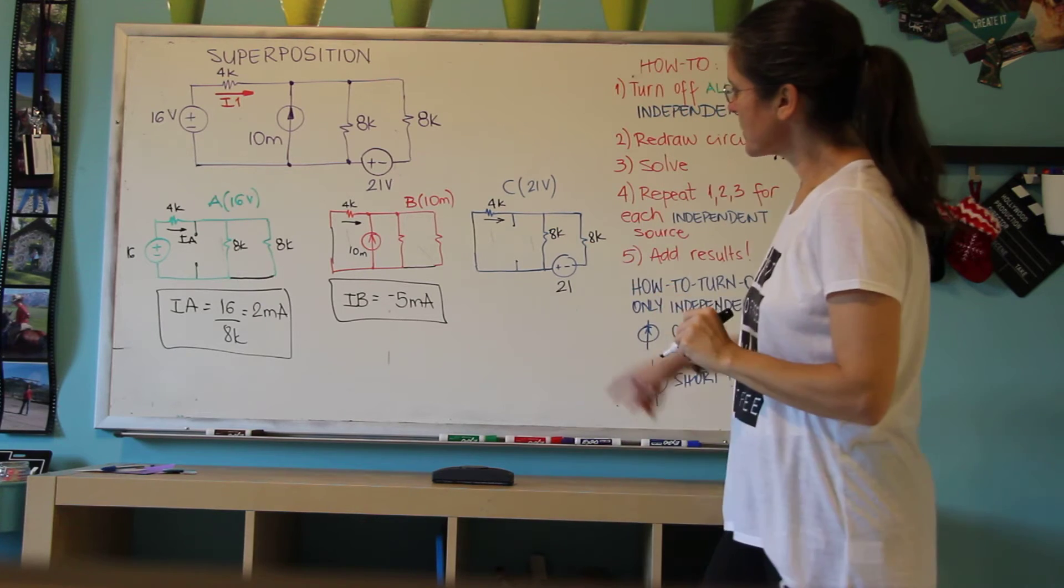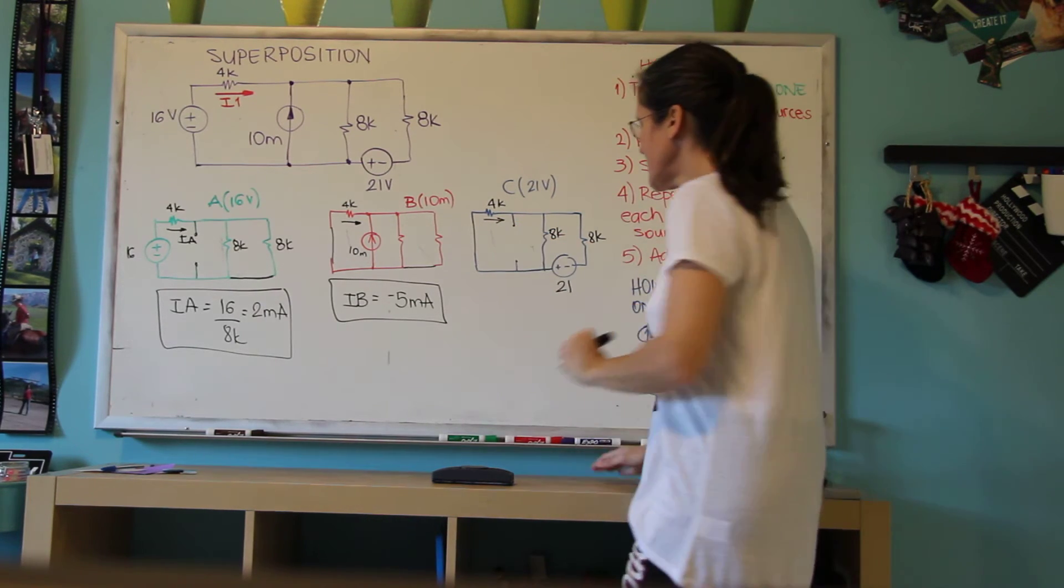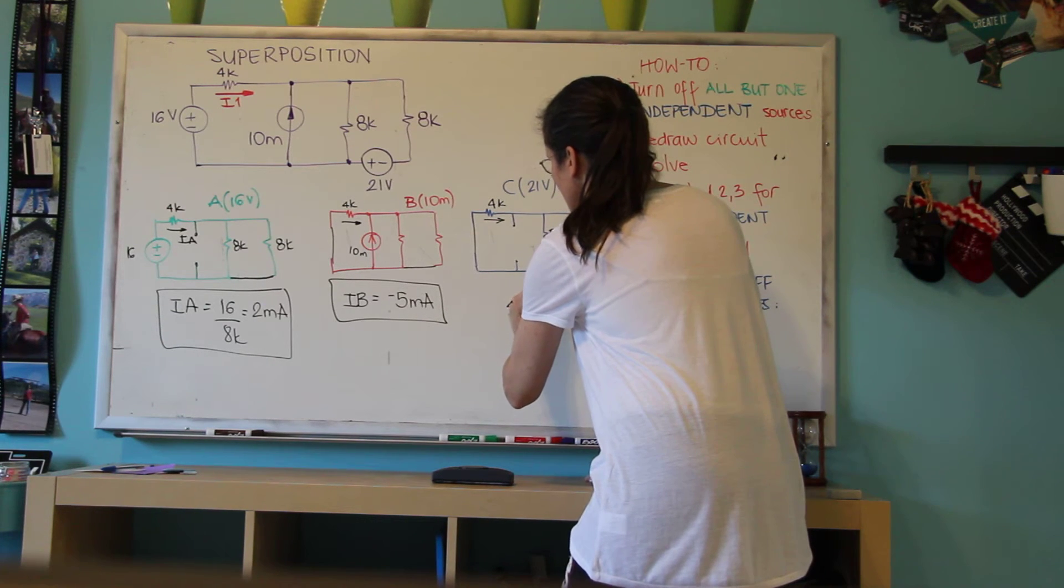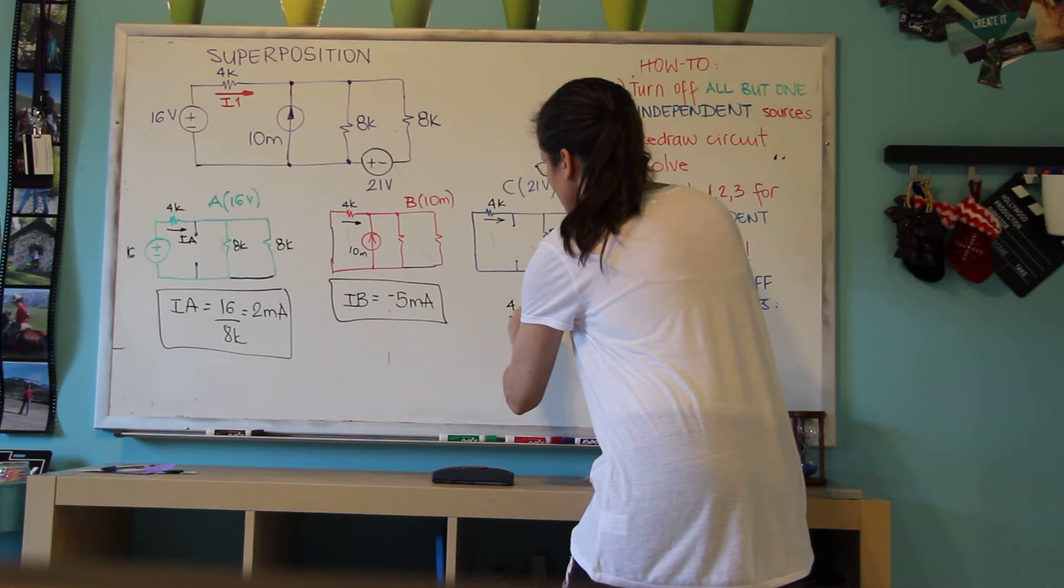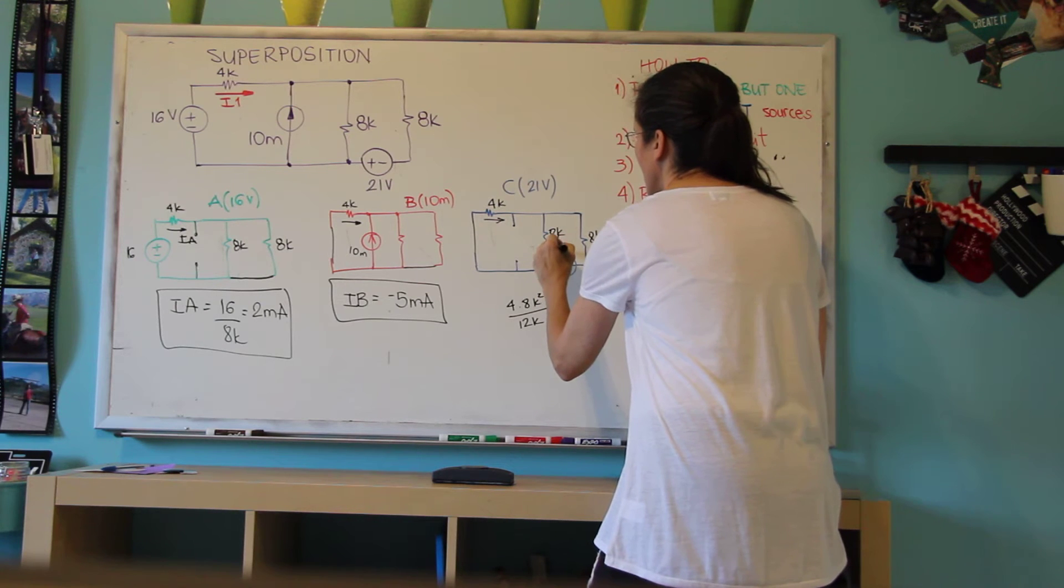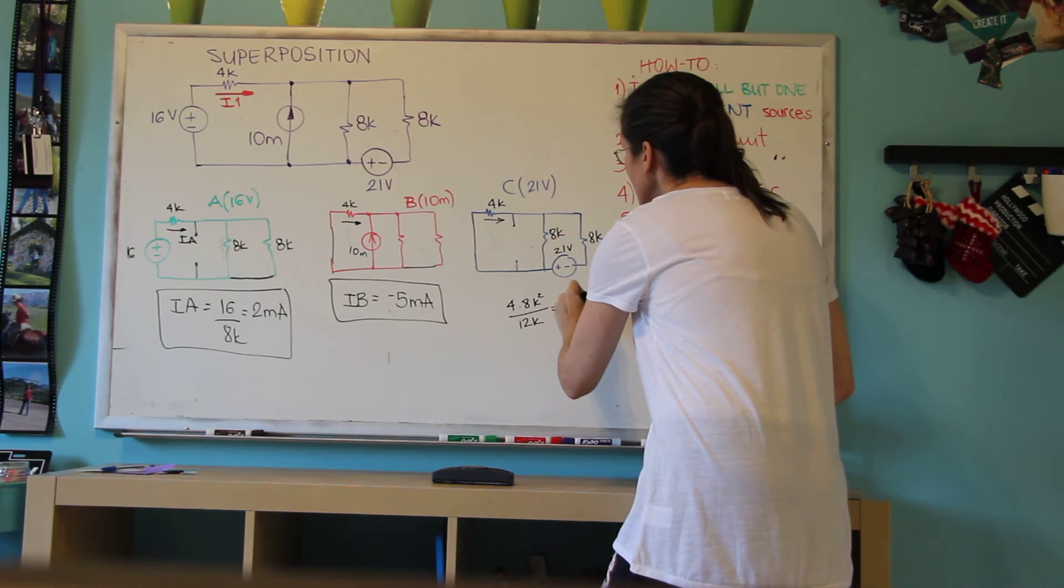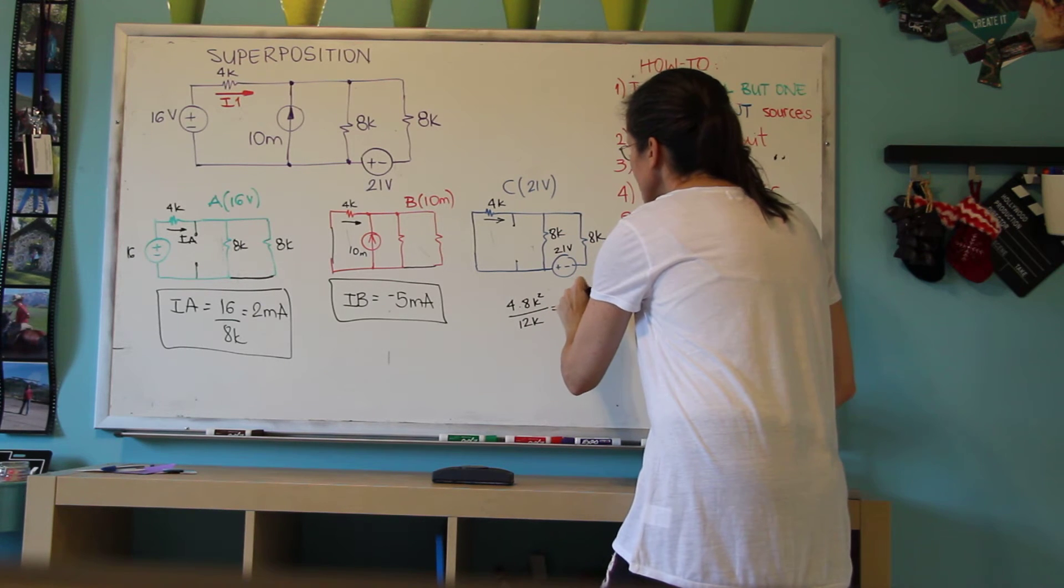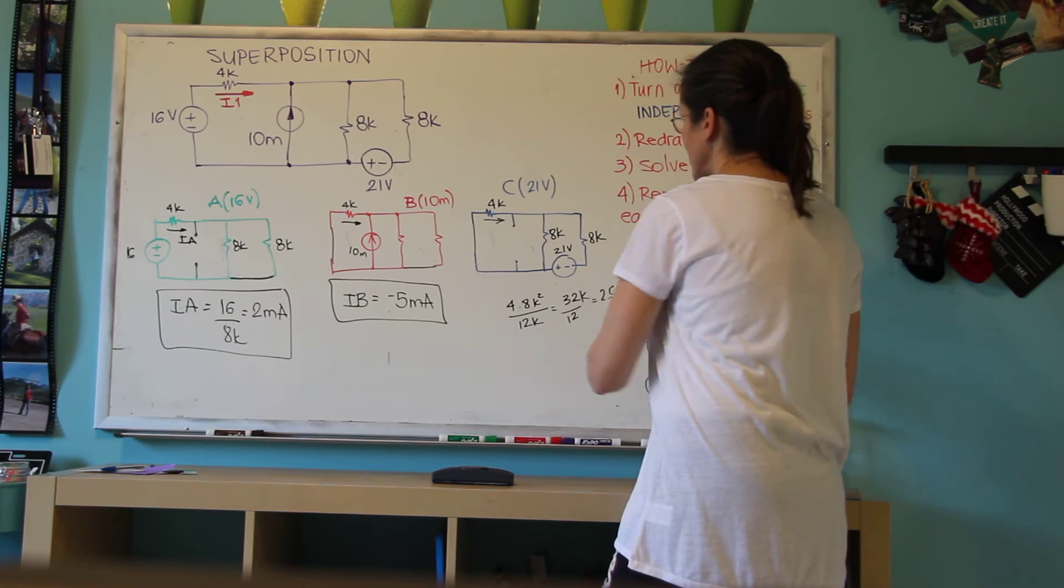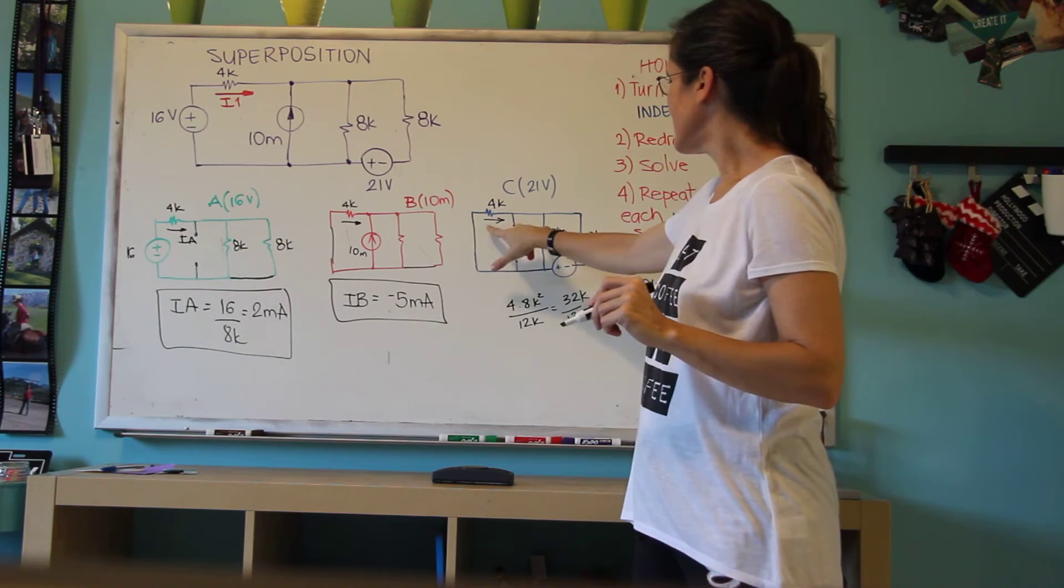And 4K. And now notice I have a 4K in parallel with 8K, which is 4 times 8K squared divided by 12K. It's 32 divided by 12. There's a K on the top. 2 point something, 5K I'm going to guess.